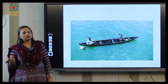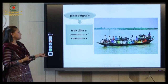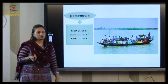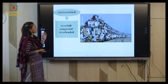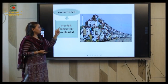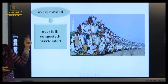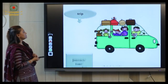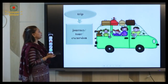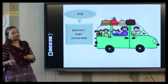Everyone highlight the hard words. It's on page number 42. What is the meaning of 'passengers'? Passengers means travelers, commuters, or customers. You can write down the meanings as well. What is the meaning of 'overcrowded'? Overcrowded means overfull, congested, or overloaded. What is the meaning of 'trip'? Trip means journey or excursion. These are the hard words from Lesson 1.